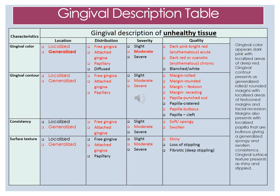The consistency of the gingiva, in terms of distribution, affects the free gingiva and the attached. The severity is moderate, and we will see soft and spongy along with swollen for the consistency. The texture is generalized, affecting more of the free gingiva, is moderate, and is shiny. It does still have its stippling. Overall, the gingival color appears dark pink with localized areas of deep red. Gingival contour presents as generalized rolled and rounded margins with localized areas of festoon margins and facial recession. Margins also present with localized papilla that are bulbous, giving a generalized spongy and swollen consistency. Gingival surface texture presents as shiny and stippled.